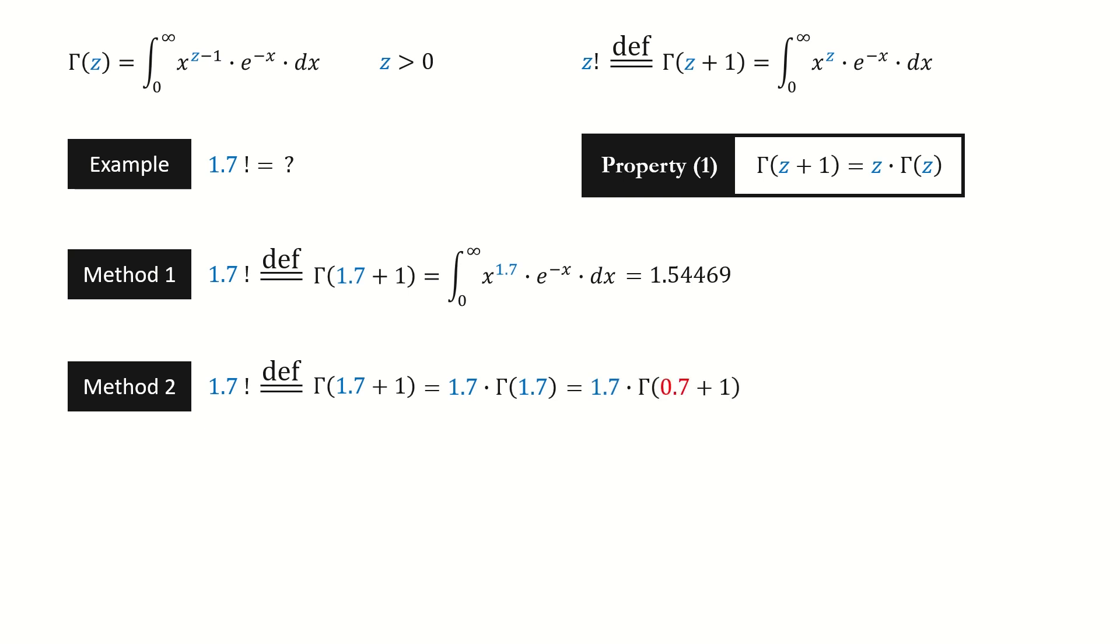Next, we write gamma 1.7 in this way. Then we use property 1 again. To compute gamma 0.7, we have to plug into this integral.